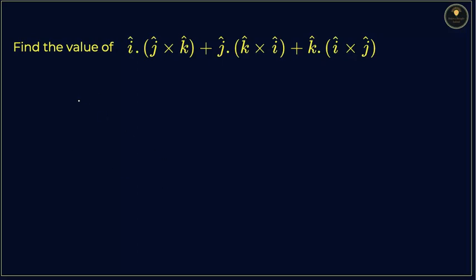In this question, we have to find the value of these three things given here. We have to understand - I'm writing the value as i here, this one is j, and this one is k.